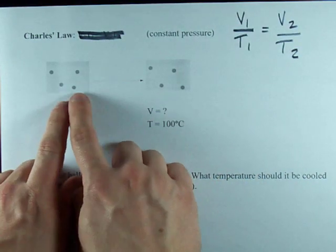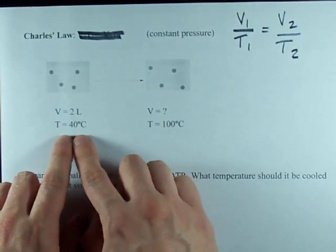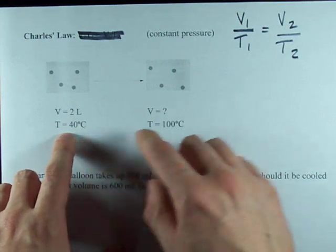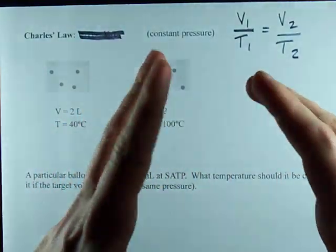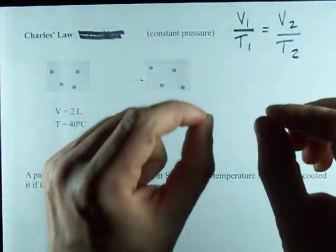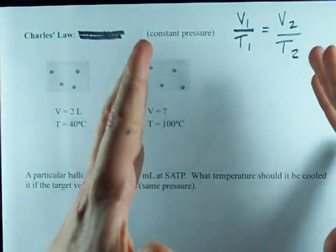Here's an example. I've got this chamber, it's two liters and it's at 40 degrees Celsius. Now I'm gonna heat it to 100 degrees Celsius. If the chamber stays at a constant pressure, it's going to have to expand.